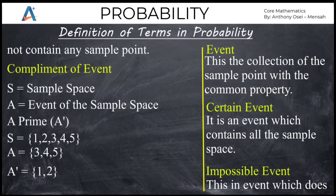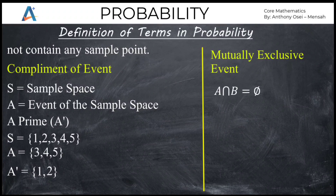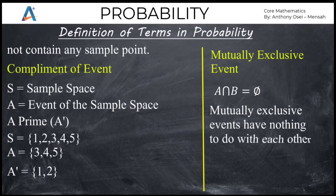The next type of event is mutually exclusive events. If A and B are events such that the two events cannot occur at the same time, then we say that event A and event B are mutually exclusive. That means A and B have no intersection, so A ∩ B equals the empty set (∅). Mutually exclusive events do not occur together — they have nothing to do with each other, no intersection, and no joint occurrences.